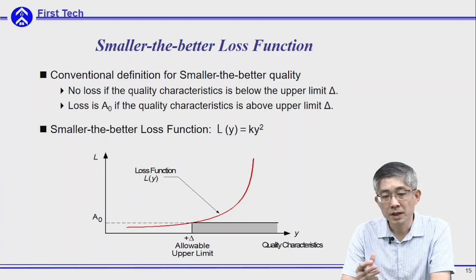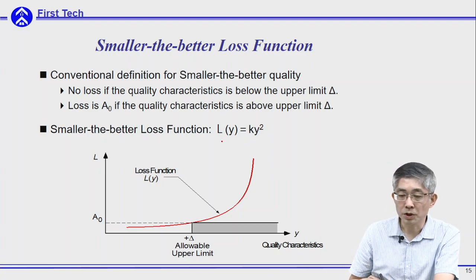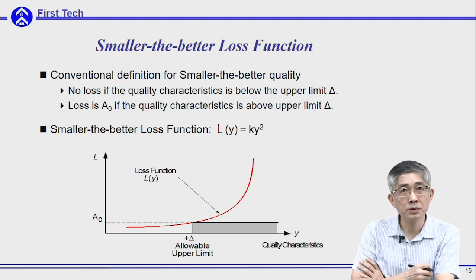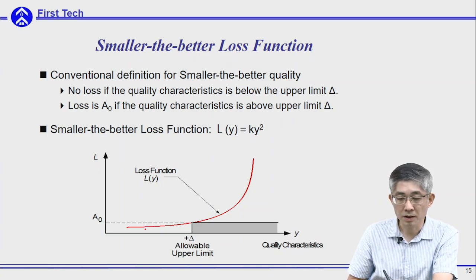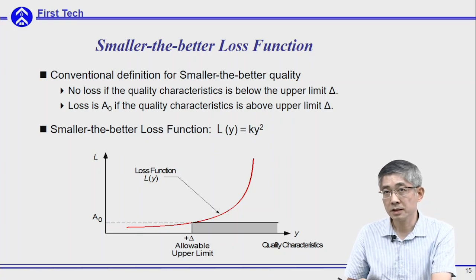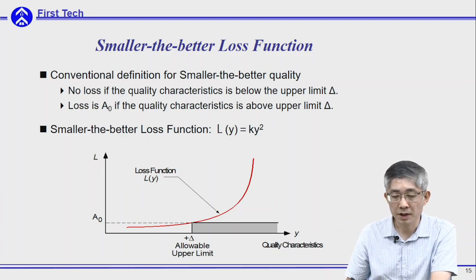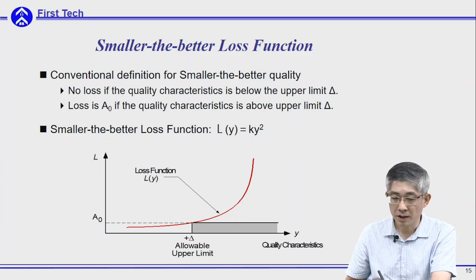For the smaller-the-better loss function, he uses another quadratic function: KY². Since the smaller the output the smaller the loss, if you have a smaller output the loss will be smaller too. In the previous criteria for smaller-the-better, they used a step-type loss criteria with an allowable upper limit.